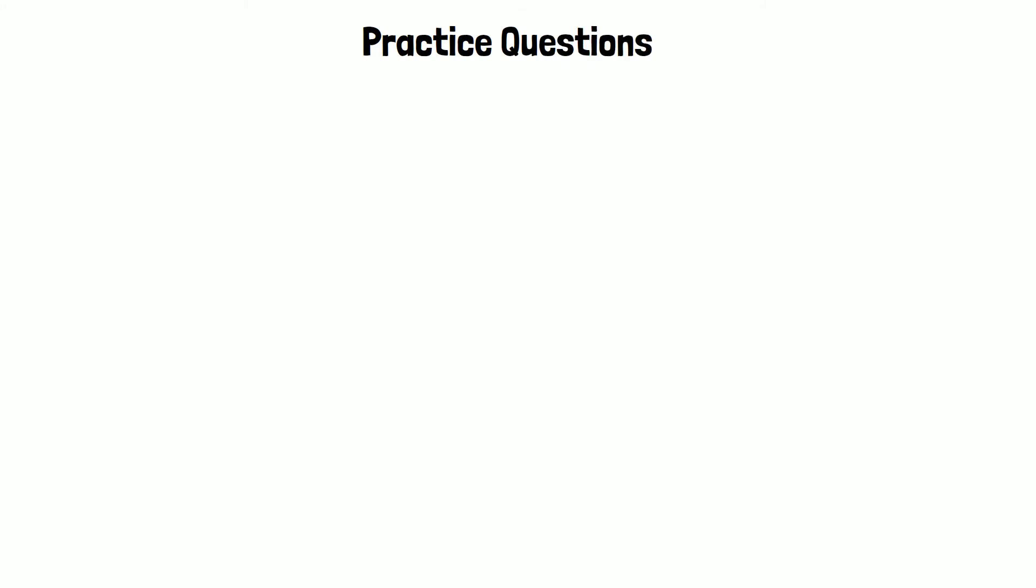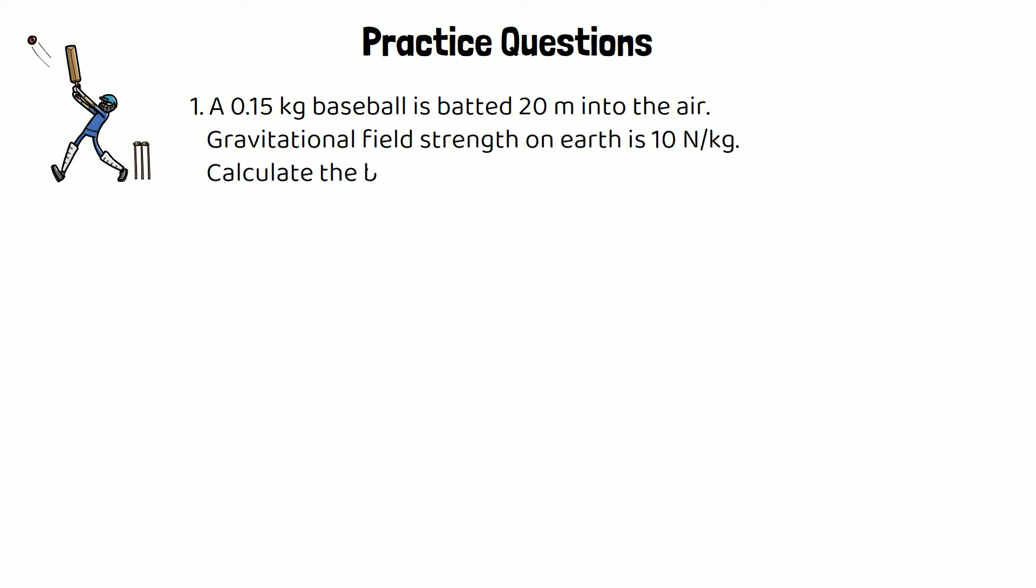Let's have a look at some more practice questions on this. There are three for you to try. In the first question, a 0.15 kilogram baseball is battered 20 meters into the air. Gravitational field strength on earth is 10 newtons per kilogram. Calculate the ball's gravitational potential energy. So same question, you need to use the same equation, just with different values.